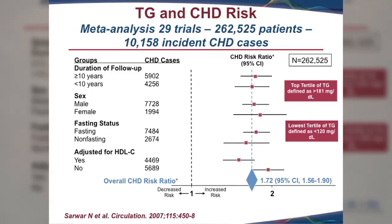This is a meta-analysis combining data from 29 trials involving 262,000 patients and about 10,000 cardiovascular disease events. They compared the risk in individuals with the highest triglycerides — greater than 181 — versus individuals with the lowest triglycerides — less than 120. Overall, individuals with higher triglycerides had a 72% increased risk for the development of coronary heart disease events such as heart attacks or strokes, relative to those with lower triglycerides. So clearly, triglycerides are associated with higher risk for cardiovascular disease events.